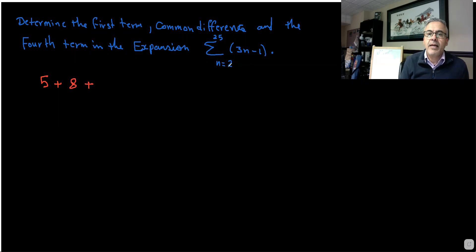Plus sub n, the next number, which is 4. 3 times 4 is 12 minus 1 is 11.